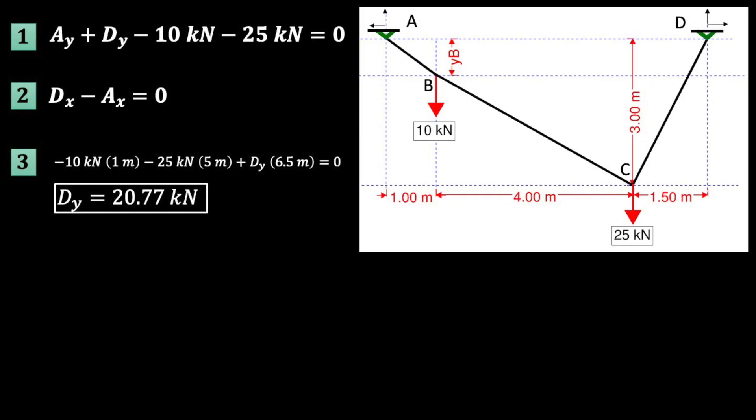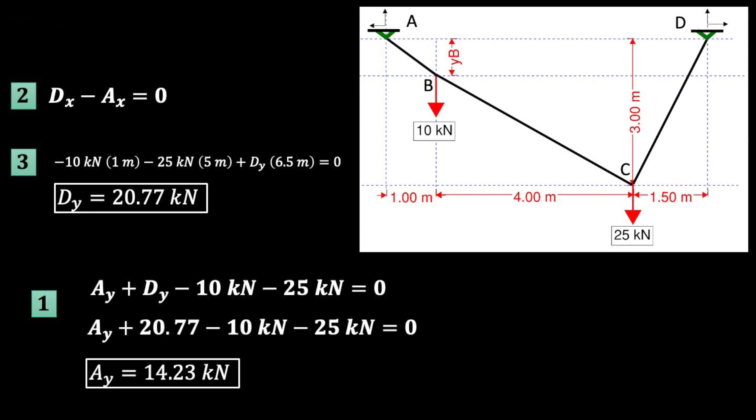Now let's look at everything we've got. From equation 3, we solved for DY, which means we can take that and plug it into equation 1. AY is now our only unknown in equation 1, so we can solve. And box it up. AY equals 14.23 kilonewtons.